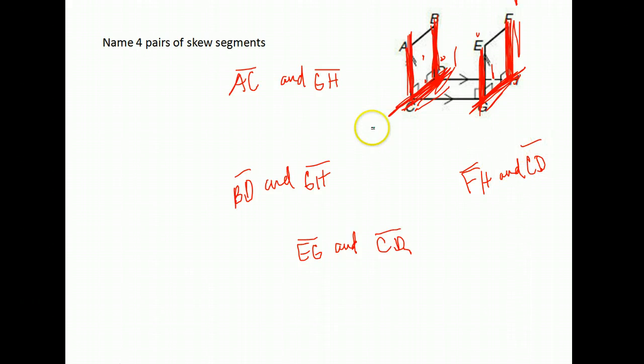So again, skew lines are lines that do not intersect and the reason they don't intersect is because they're not on the same plane.